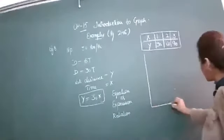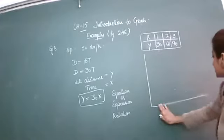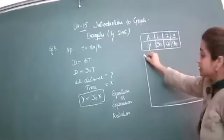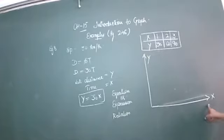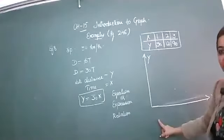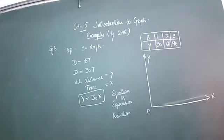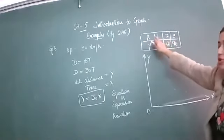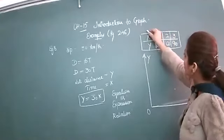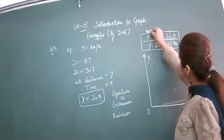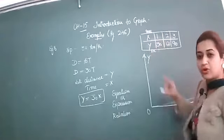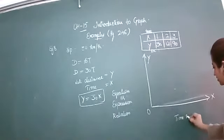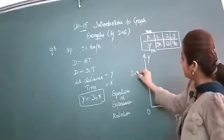Now let's start with the graph. Plot your x-axis and y-axis. This horizontal line is your x-axis and this vertical line is your y-axis. The point of intersection is called the origin with coordinate (0, 0). Time is in hours and distance is in kilometers, so you have to write the units.